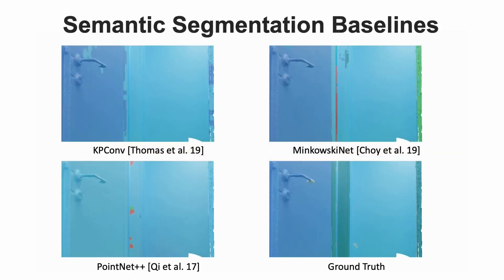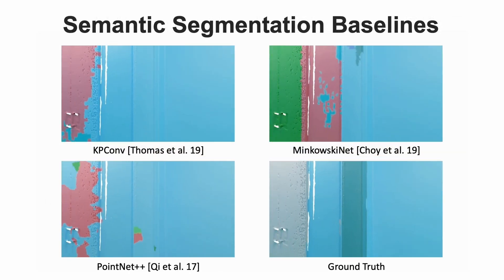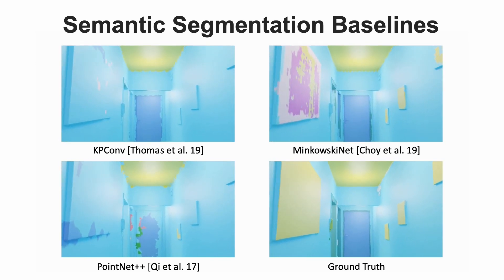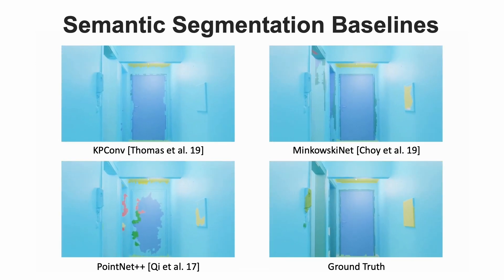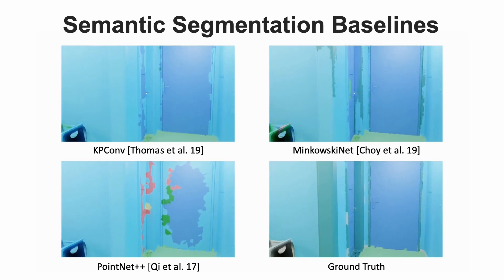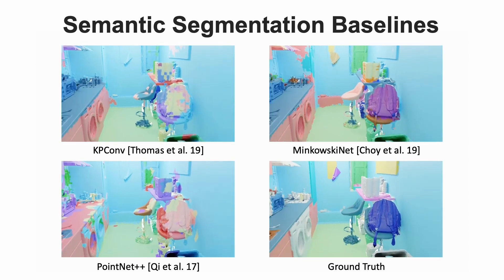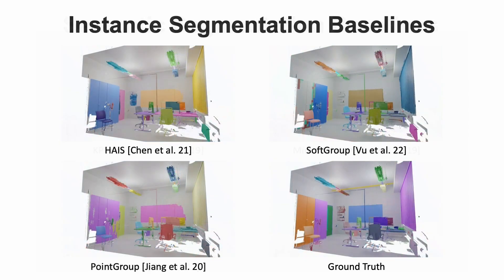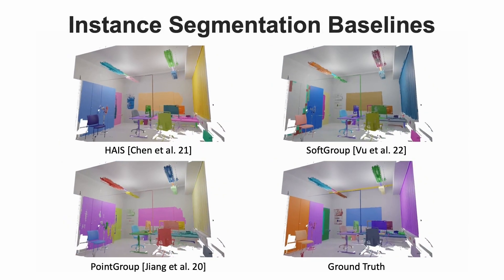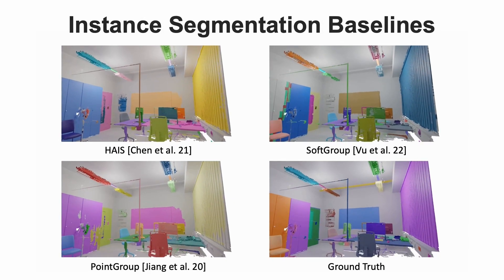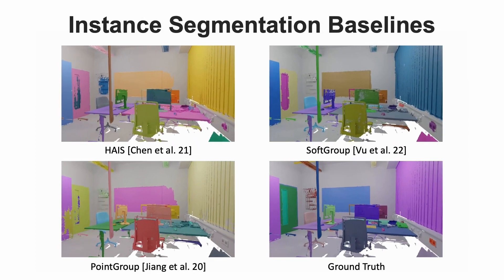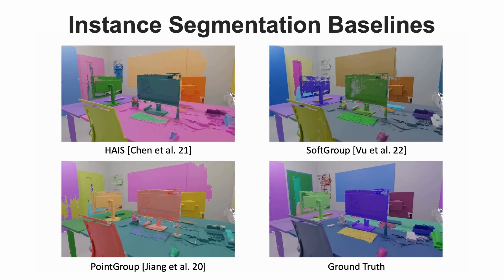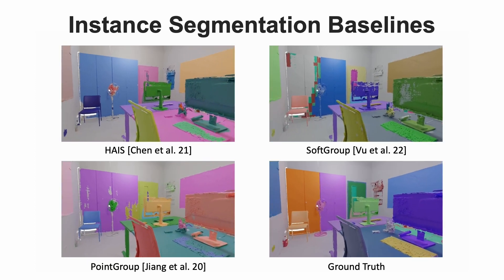We benchmark both 3D semantic segmentation and instance segmentation with state-of-the-art baselines on long-tail and fine-grained annotations. We see that state-of-the-art methods work well on distinct large objects such as chairs and tables, but leave room for improvement on smaller objects and ambiguous classes.